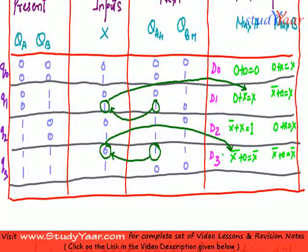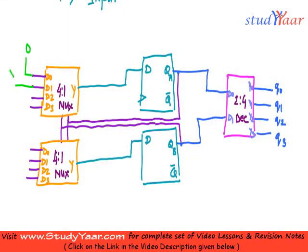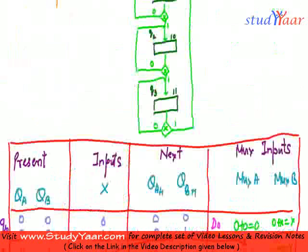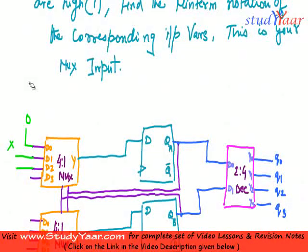So for d0, d1, d2, d3 for max A, the values are 0, x, 1, and x bar. So this is x bar, this is x bar — 0, x, 1, and x bar. This is not x bar, this is 1, and this is x bar.